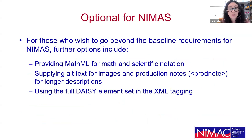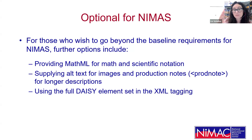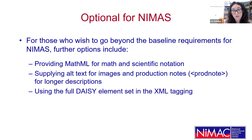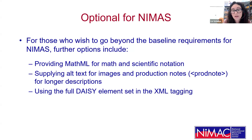For those who wish to go beyond the baseline requirements for NIMAS, there are options to improve your files. These include providing MathML for math and scientific notation — that is tagging your math expressions in the XML itself rather than providing all of the math as images in your file. MathML can be processed by some Braille transcription softwares and other softwares, and so it can help speed up the process of accessible format creation. It's also desirable, though not required, to supply alt text for images and production notes for longer descriptions, as well as using the full DAISY element set in XML tagging.